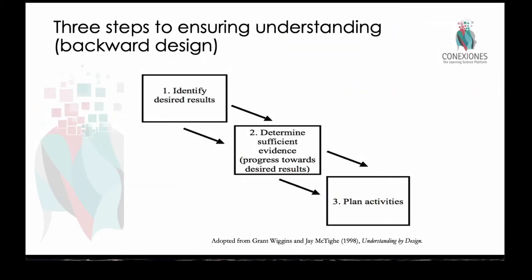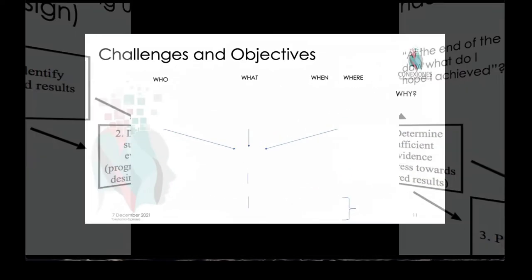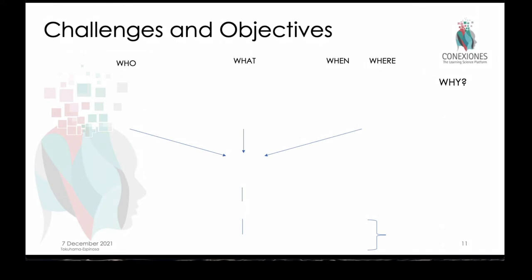So in our three-step process, understanding and being able to articulate the objectives is really key, because without that we're not able to do the second step — deciding what we're going to use as criteria for achieving those objectives, the evaluation criteria — and then finally, what activities we do in class. Oftentimes teachers are after a lot of good activities without having that clear objective. We will get to a long list of activities — more than 600 tools — but we want you to first think about this at a more macro level.